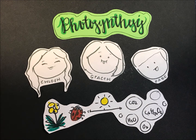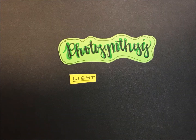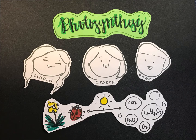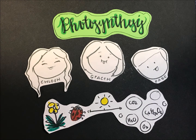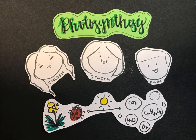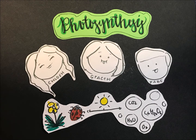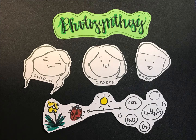Photosynthesis is broken down into two words: photo, meaning light, and synthesize, meaning make. This is a general process in which green plants, along with other organisms, use sunlight to synthesize molecules like carbon dioxide and water to produce products like glucose and oxygen. It follows the equation: 6CO₂ + 6H₂O → 1 glucose + 6O₂.